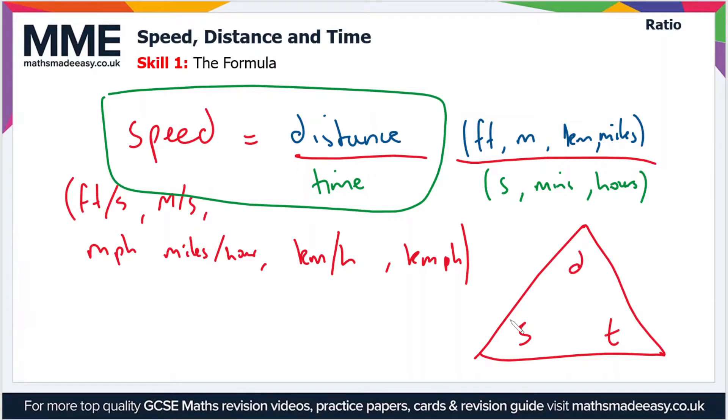So if I want to work out the speed, I just divide the distance by the time. So if I want to work out the time, I just divide the distance by the speed. If I want to work out the distance, I multiply the speed by the time.